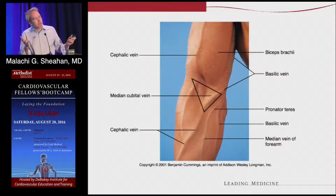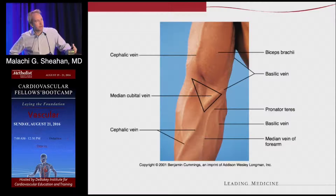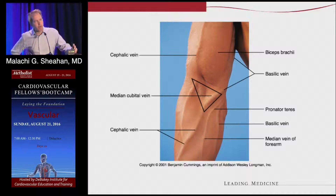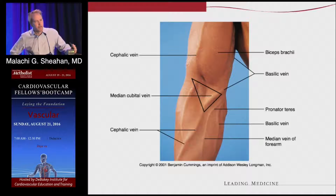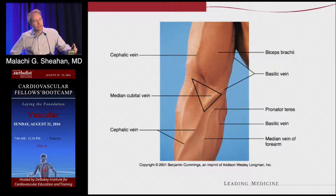The cephalic vein and the basilic vein communicate in the antecubital fossa through the median antecubital vein — that's important. We used to do arm vein bypasses, taking out the whole basilic and cephalic vein for lower extremity bypasses, connected hopefully by median cubital veins. The vein they love to stick for IVs at the elbow is actually the antecubital vein; the actual basilic vein at the elbow is very, very medial.